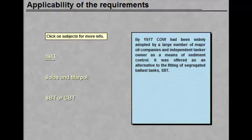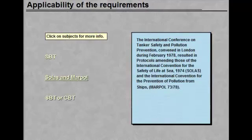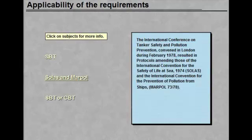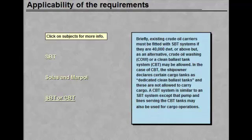The International Conference on Tanker Safety and Pollution Prevention, convened in London during February 1978, resulted in protocols amending those of the International Convention for the Safety of Life at Sea and the International Convention for the Prevention of Pollution from Ships. Existing crude oil carriers must be fitted with SBT systems if they are 40,000 deadweight tonnes or above, but as an alternative, crude oil washing or a clean ballast tank system may be allowed.